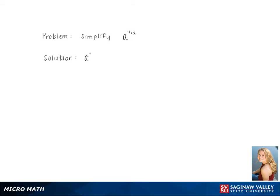To simplify a raised to the negative one-half power, we are going to use the formula below and move the negative exponent down to the denominator of the fraction. Simplifying gives us one over the square root of a.